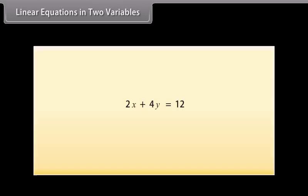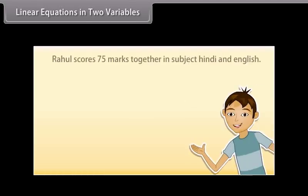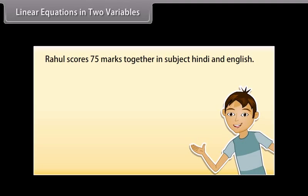A linear equation can have more than one variable. Here we will study about linear equations in two variables. Let's take an example: Rahul scores 75 marks together in Hindi and English. How can we express this information in the form of an equation? Here you can see that the marks of neither subject are known — that is, there are two unknown quantities.